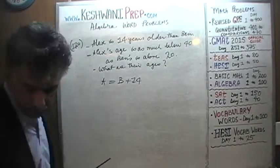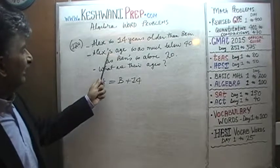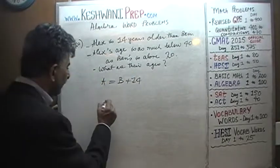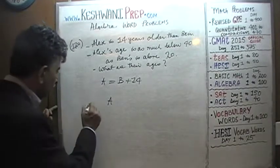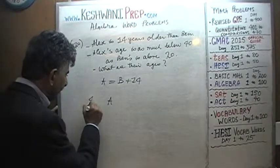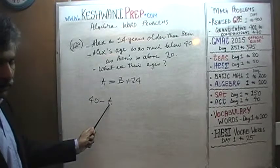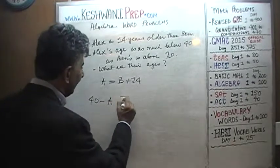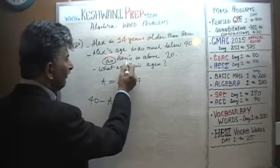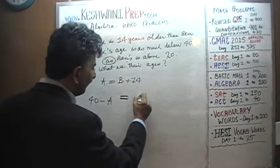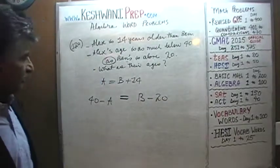Let's look at the second statement. Alex's age is as much below 40, so if we represent Alex's age as A, then 40 minus A gives how much below 40 Alex is. That quantity equals Ben's age above 20, meaning B minus 20. So the second equation is: 40 minus A equals B minus 20.